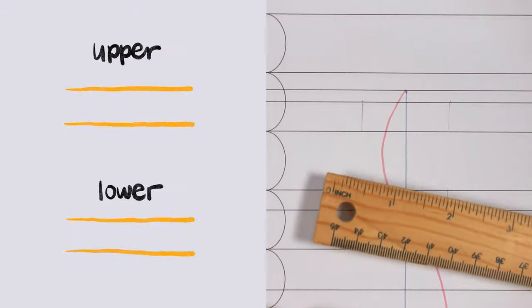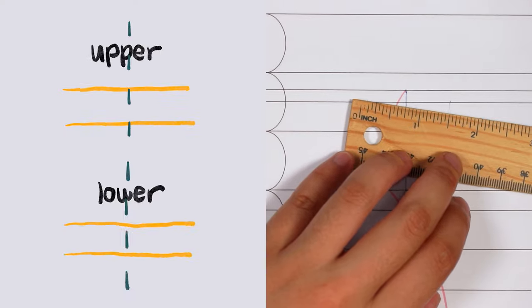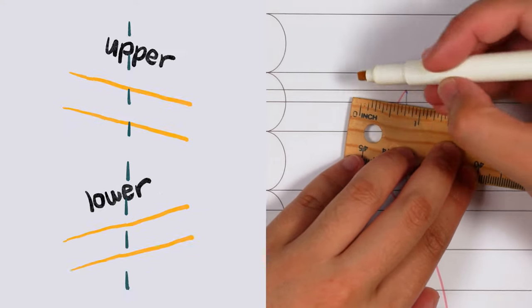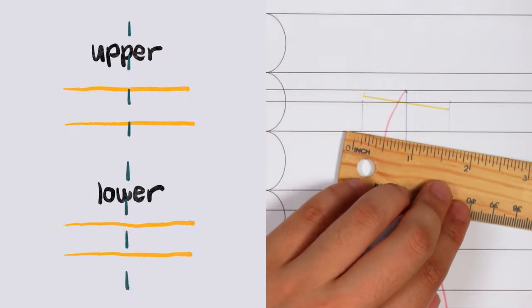So the shoulder line is paired with the apex line, and these two lines always stay parallel to each other. Then there's also the waist line and the hip line as their own pair, and they also stay parallel to each other. The way action lines work is that they rotate along the balance line, and the rule is that the top pair of action lines will always rotate in the opposite direction of the bottom pair of action lines.